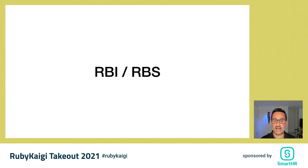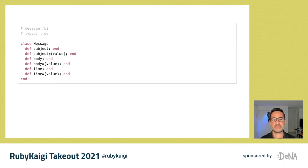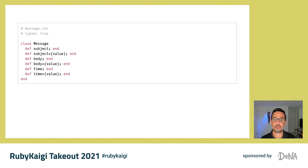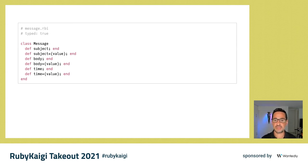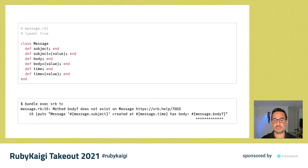If we start to write a message.rbi file, this file tells our static type checker — Sorbet in this case — that the Message class declares getters and setters for subject, body, and time. Note that an RBI file is just a Ruby file with missing method bodies — we don't need method bodies since those are not relevant to the external interface of the class. If you're familiar with C, this is like the header file: function definitions are placed in the header, but the bodies are in the C file. With this RBI file in place, our type checker can tell us what is wrong — it tells us that the method body? doesn't exist on the Message class.